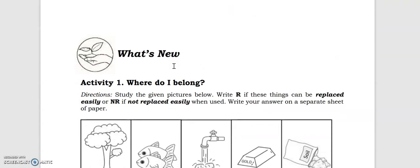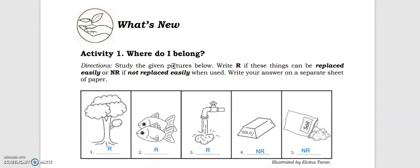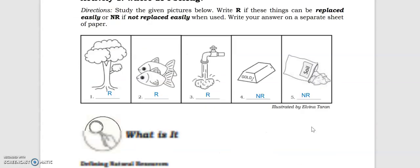For the What I Know, What's New, we have here the picture. RE stands for replaced easily and NR for not replaced easily. So the trees, the fish, water, they can be replaced easily, whereas the gold, the soil, they cannot be replaced easily in our shaft.